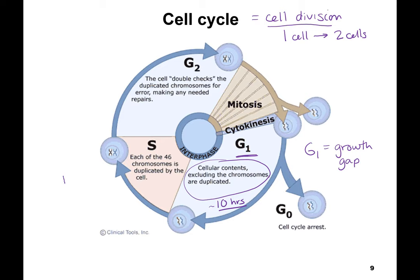S phase is DNA replication — everything we talked about with DNA replication: helicase, ligase, Okazaki fragments, leading and lagging strands. All of your 46 chromosomes are getting copied. This takes somewhere between 6 to 8 hours — it's very intense. S stands for synthesis — synthesis of DNA.